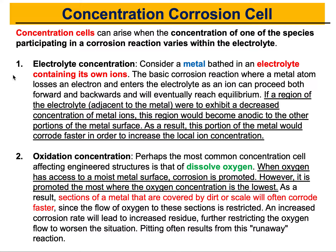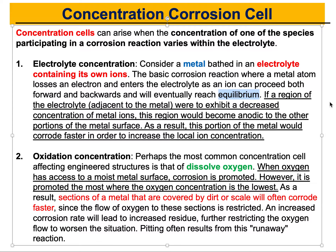For the electrolyte concentration cell, consider a metal placed in an electrolyte — let's say water — but this water already contains ions of that same metal. The basic corrosion reaction requires the metal to lose electrons, and the ions must also be present. Because the electrolyte already contains the metal ions, we will see both forward and backward reactions and will eventually reach an equilibrium. It is important to understand that we reach this equilibrium.